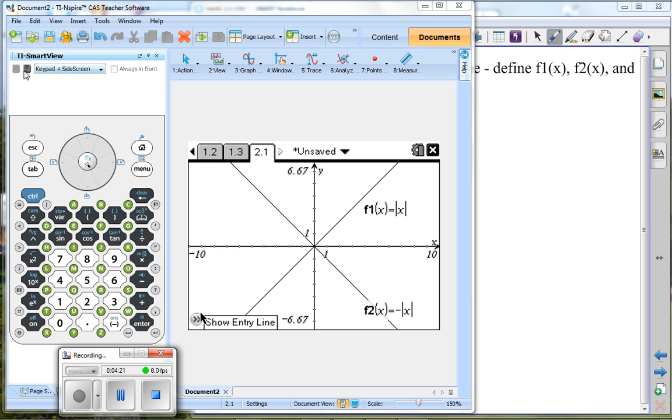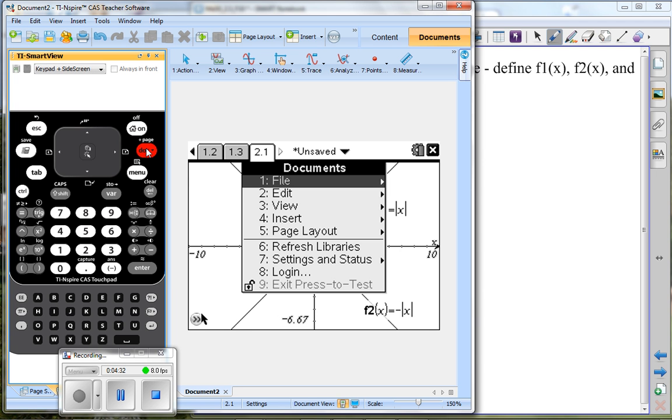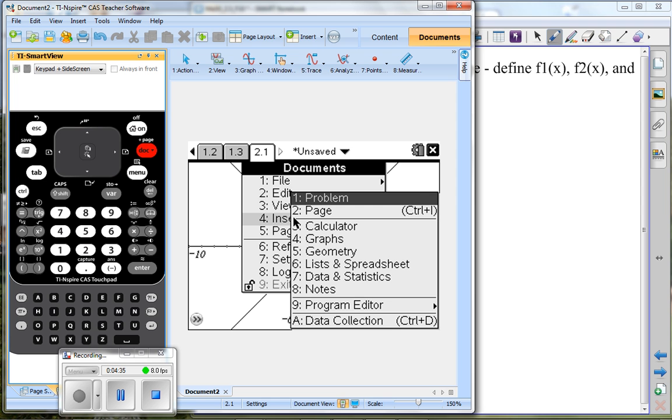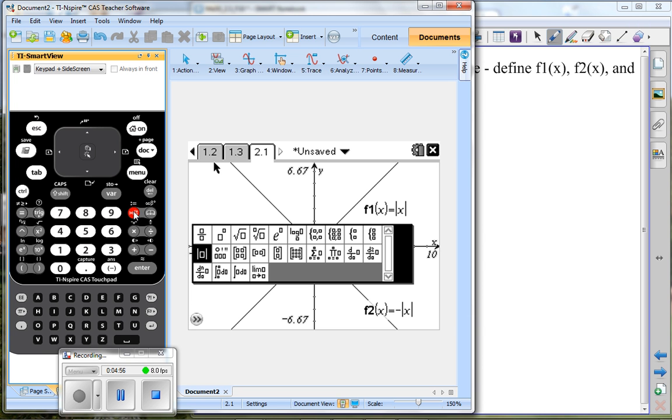For those of you working on the touch screen, let me go back and remind you of some things. To get a new problem, if we just press document, and come down to insert, we can do a new problem that way. So if you were just a little bit behind, that's how we would do that, just press document, and go into insert, and insert a new problem. For you on the touch screen, to get to the template palette, all we do is press the key right here. Not wanting to leave anyone behind.